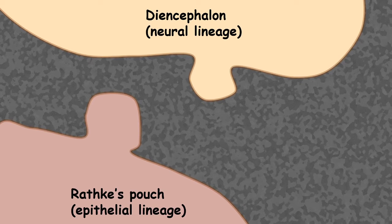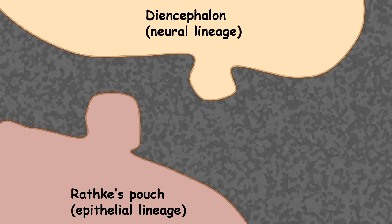During development, the anterior pituitary develops from an embryonic structure known as Rathke's pouch, which is a protrusion of nasopharyngeal epithelial lineage. The diencephalic region also gives rise to a protrusion, which ultimately develops into the posterior pituitary — meaning it has a neural lineage.